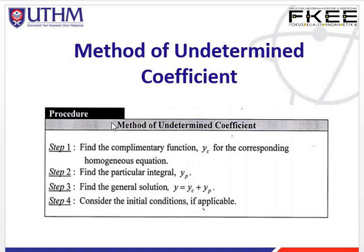The procedure to solve using the method of undetermined coefficients: first, we need to find the complementary function yc. Then second, we need to find the particular integral yp. You only need to find yp when it is a non-homogeneous equation. If it is homogeneous, you only need to find the complementary function.